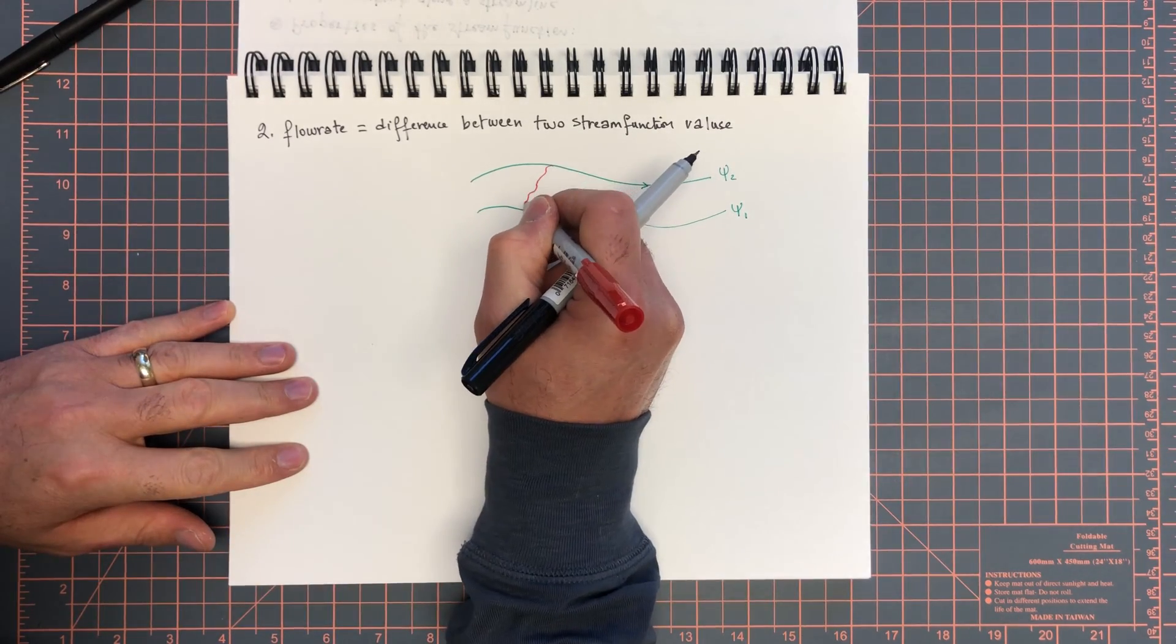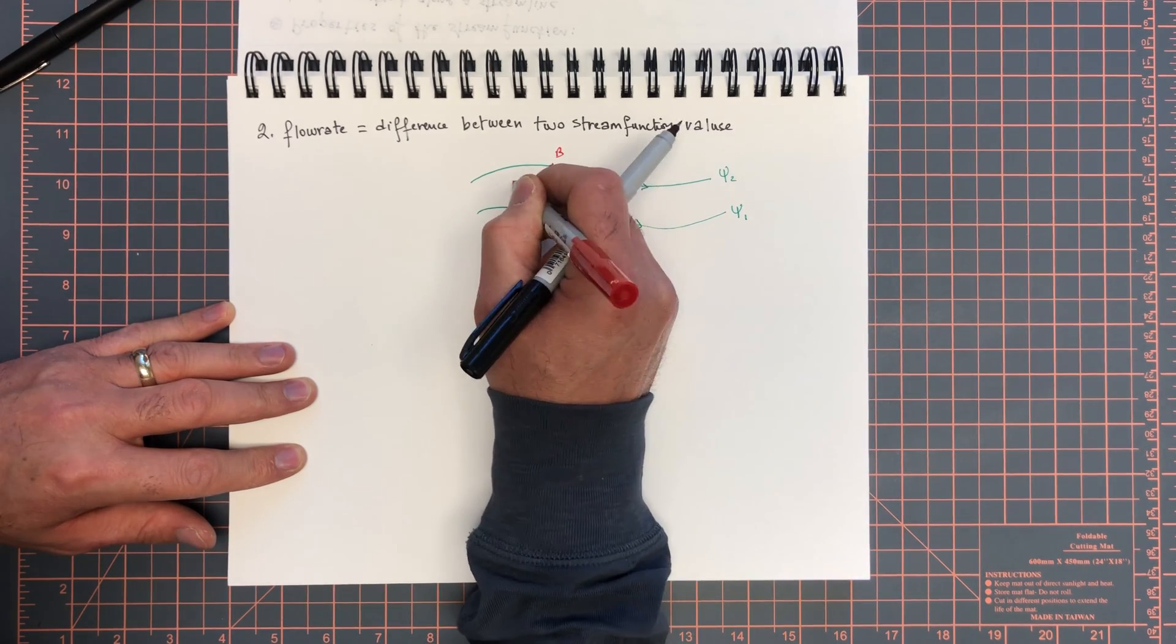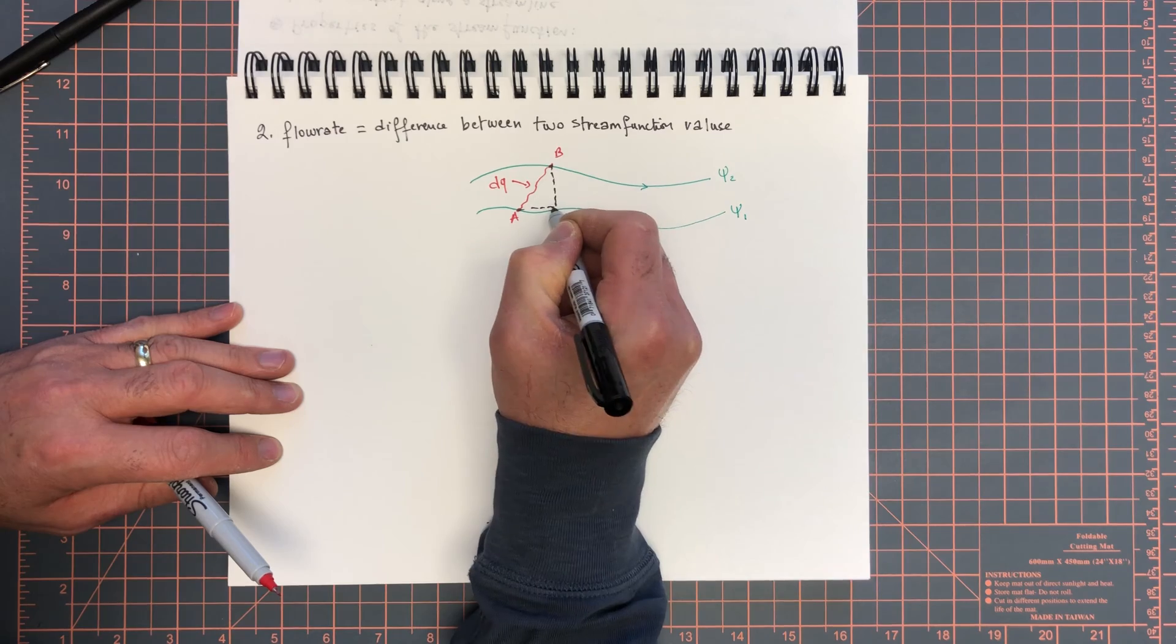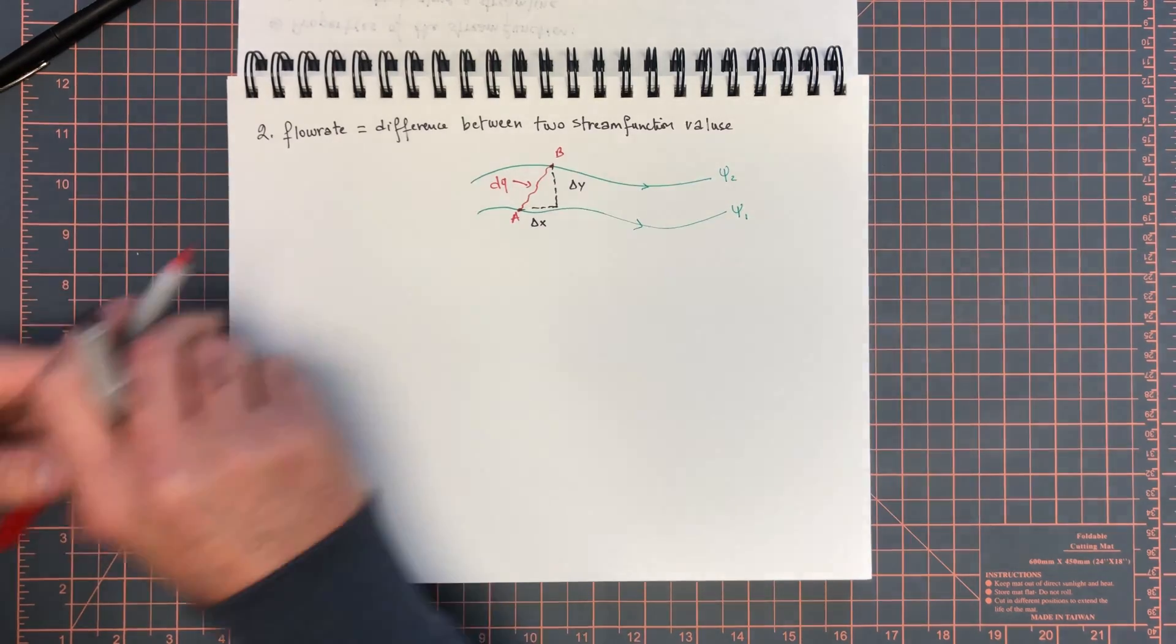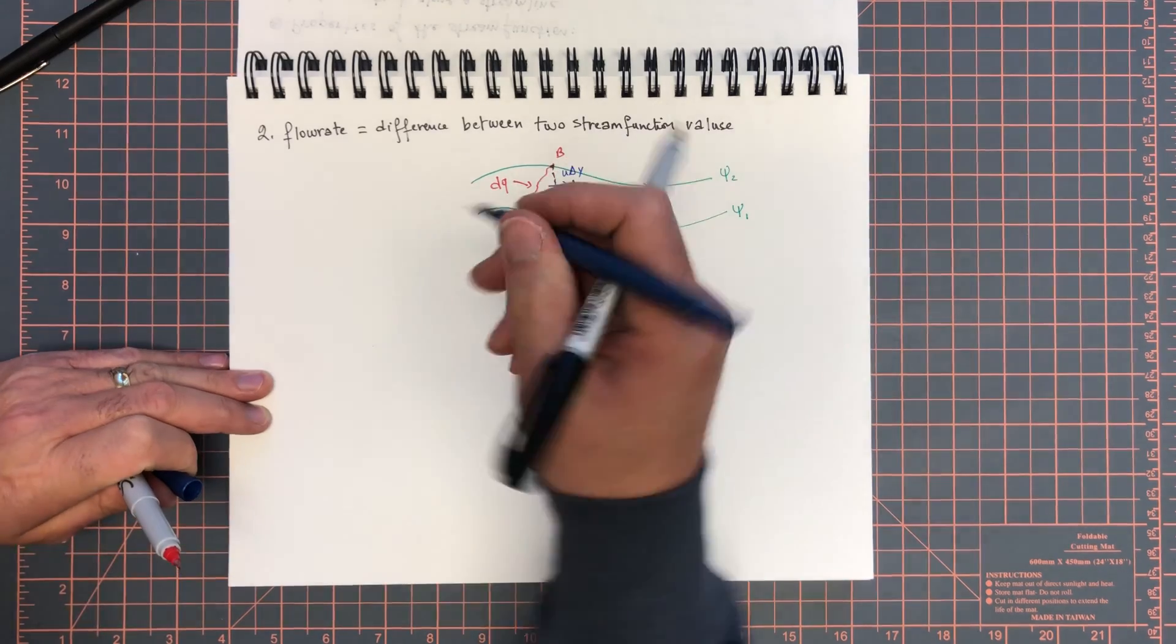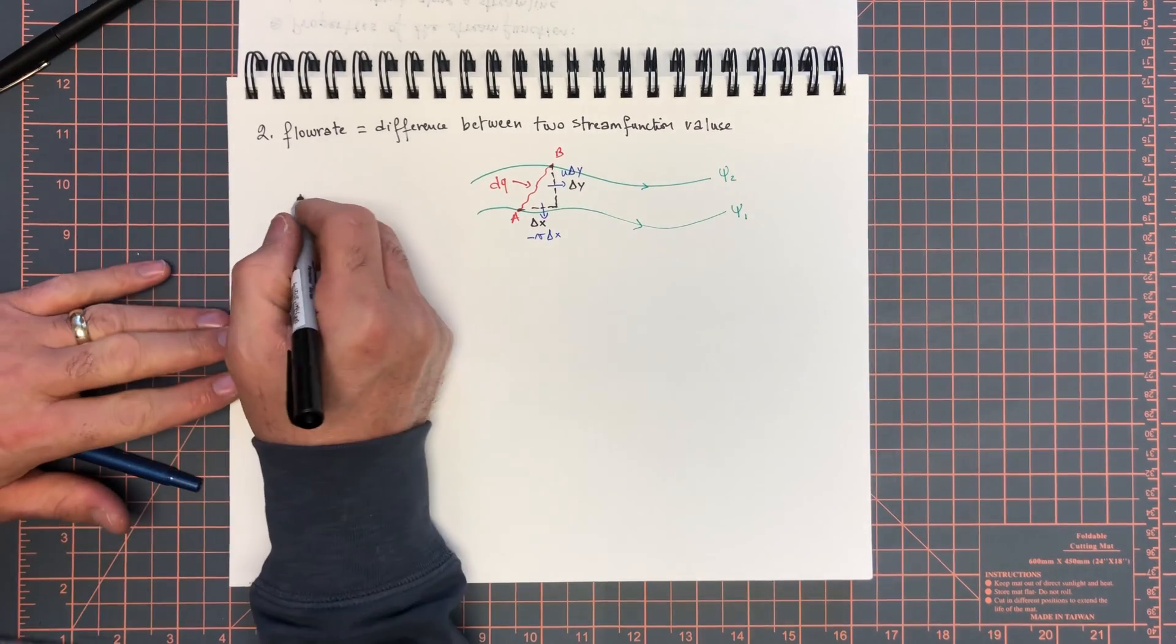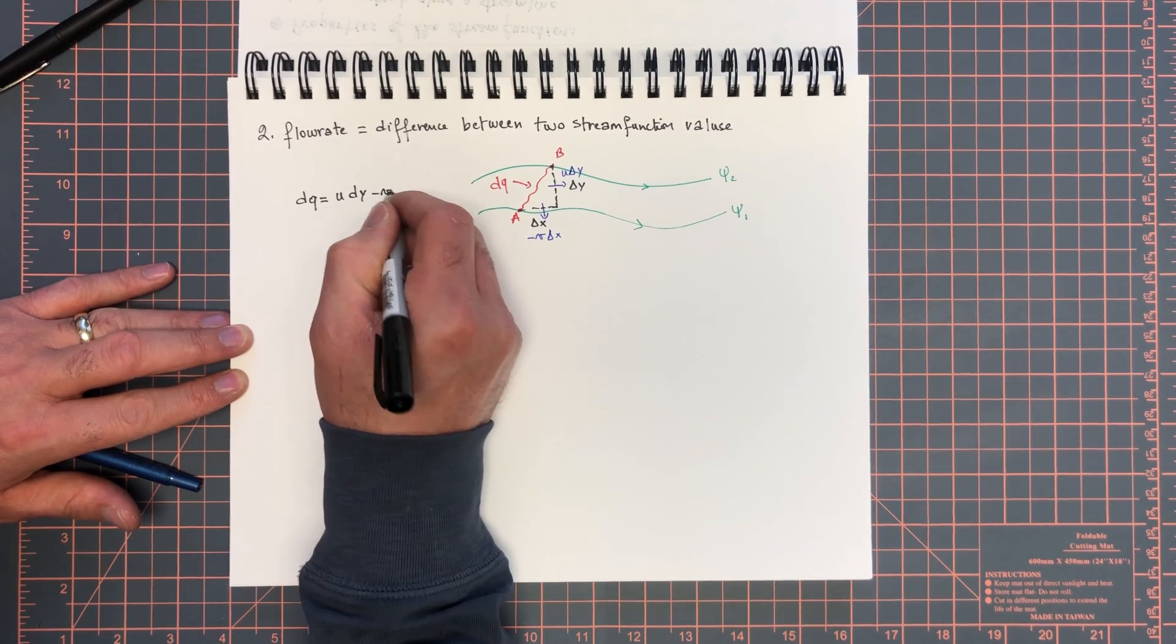There is dq coming in here, and if you take a control volume and do a simple balance - if this is Δy and this is Δx, and the flow coming out of here is u times Δy times unit depth, and the flow coming out here is minus v times Δx times unit depth - therefore you could say that dq equals u dy minus v dx.